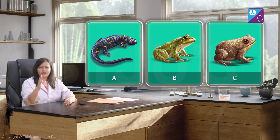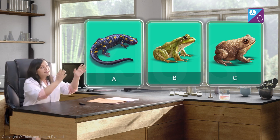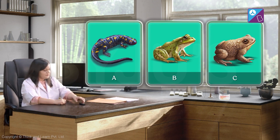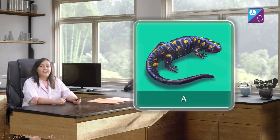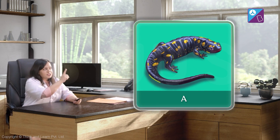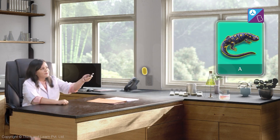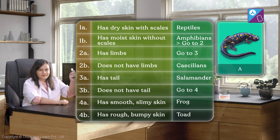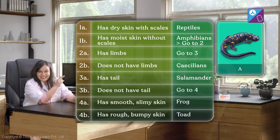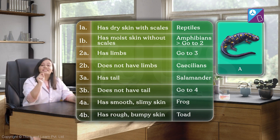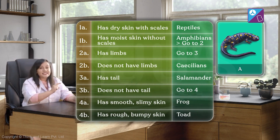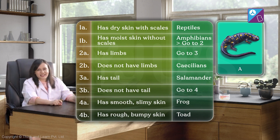To understand what a key is, let's just use one to identify these three animals. Let's start with specimen A. What you see here is a set of clues. These clues together make up a taxonomic key.